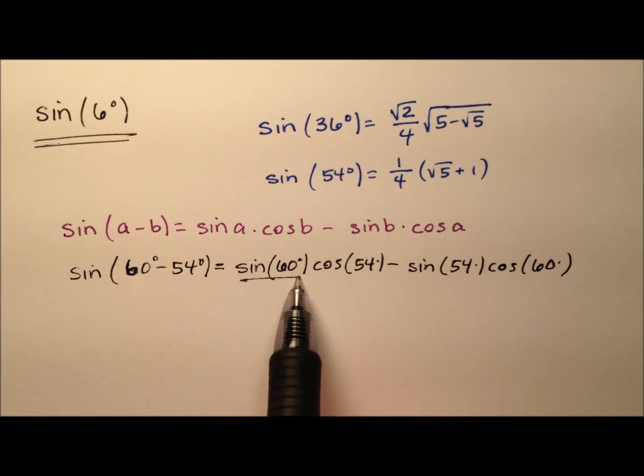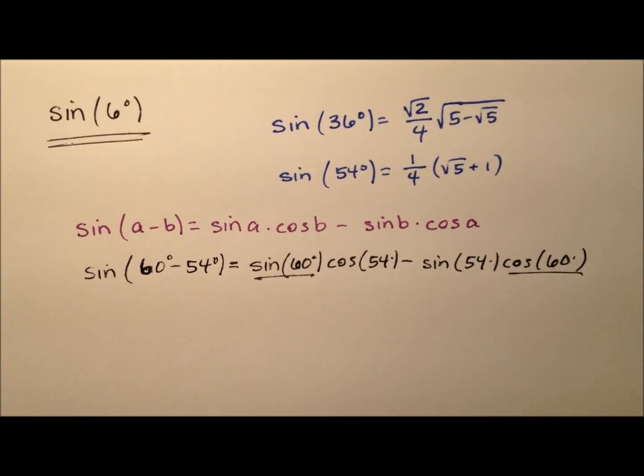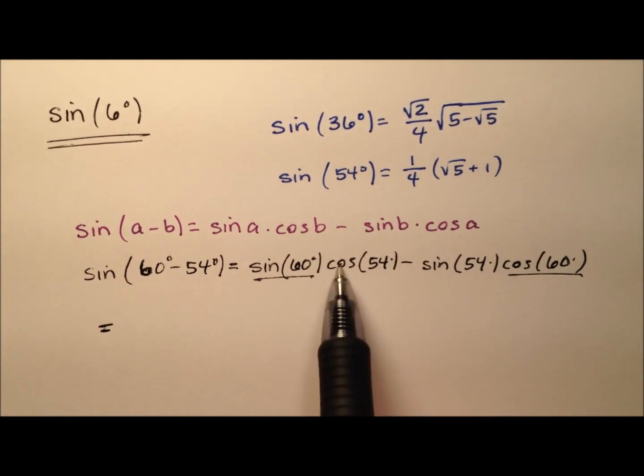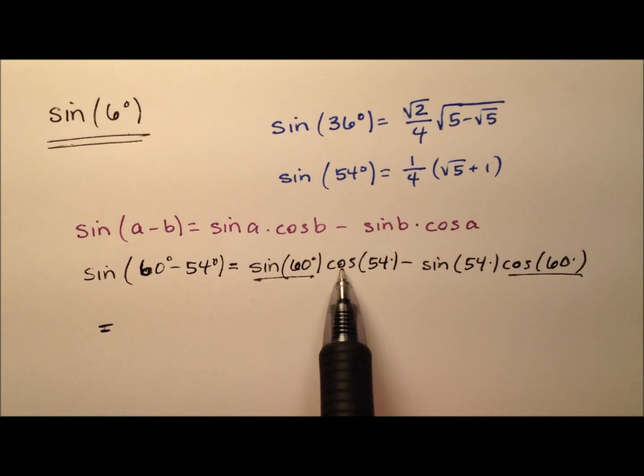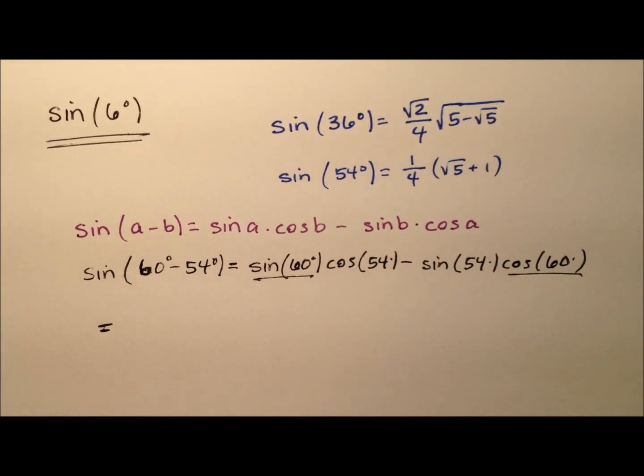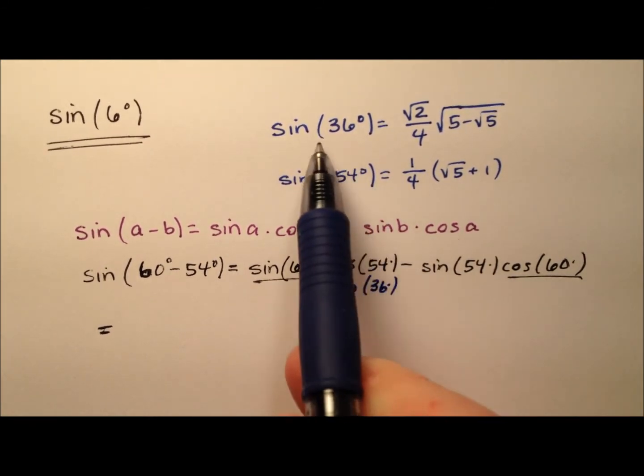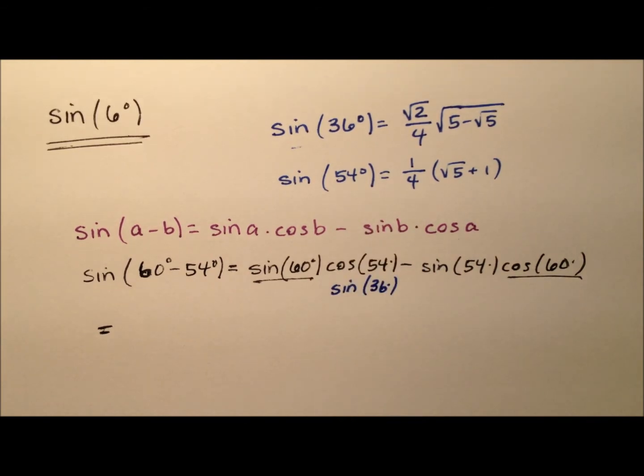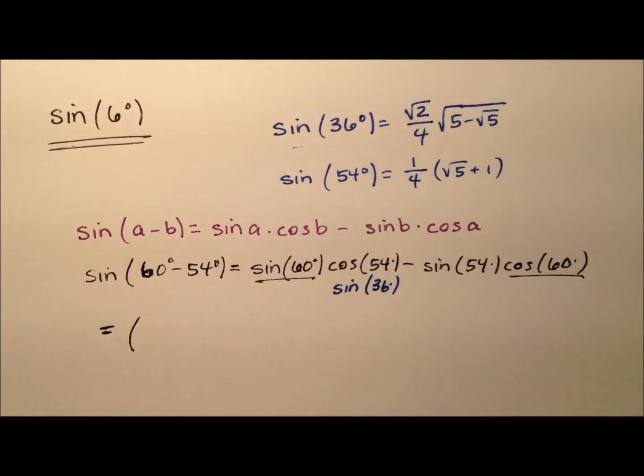Well, the sine of 60 and the cosine of 60 are really nice values. We definitely know what those are. But the cosine of 54, because of the relationship that sine and cosine have with complementary angles, I'm going to go ahead and change that cosine of 54 to the sine of 36 degrees, which I have the value for right there. And then of course, you'll see the sine of 54 is also up here. So let's go ahead and start plugging these values in.